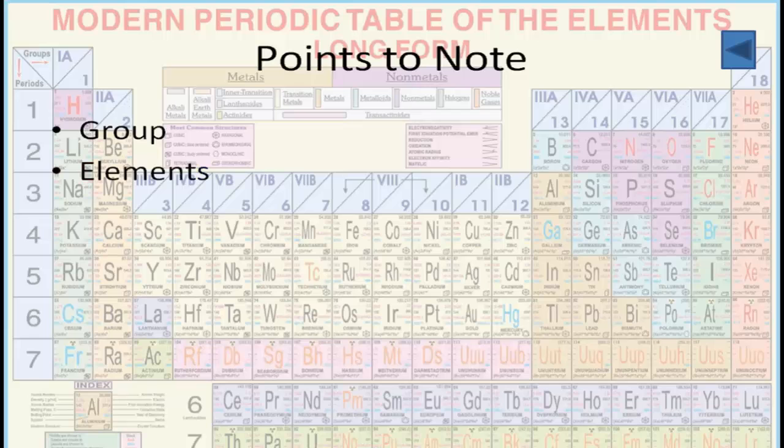Friends, this group is the combination of metals, nonmetals, and metalloids. Nitrogen and phosphorus are nonmetals, arsenic and antimony are metalloids, and bismuth is a metal. So if you see down the group, the metallic character increases. If we move from nitrogen to bismuth, the metallic character goes on increasing.